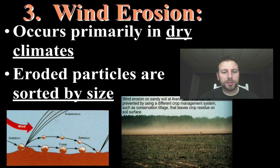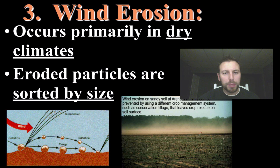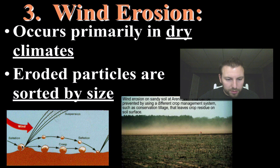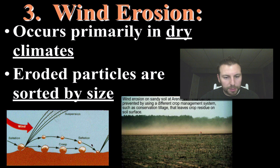Much like with river systems, we see that particles are carried or sorted by size — the same thing applies to wind. As wind velocity changes, its ability to transport and move sediments will also change. There's a relationship between wind velocity and the particle size it can carry. Larger particles bounce along the bottom in a process called saltation, or they get crept very slowly pushed along. Saltation is that bouncing motion, while suspension occurs when particles are carried in the air.